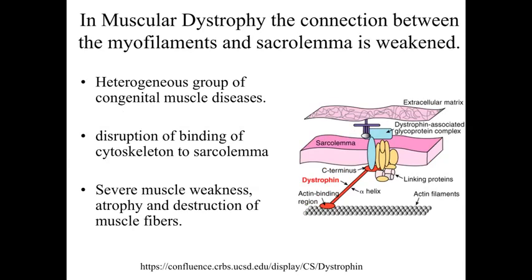Looking at muscular dystrophy, the connection between the myofilaments and the sarcolemma is weakened. In muscular dystrophy, we have a variety of disorders where the dystrophin molecule — shown in the cartoon on the right-hand side — is disrupted. This disrupts the connection between the myofilaments and the membrane, so contraction can occur in the myofilaments but doesn't correspond to contraction of the muscle. This contributes to muscle weakness, muscle atrophy, and damage and destruction of the muscle fibers.